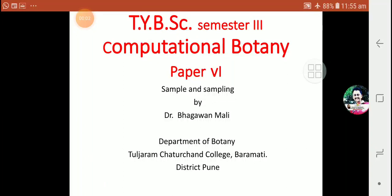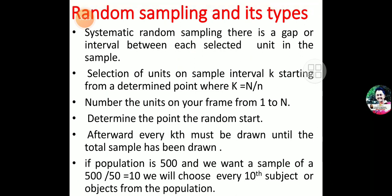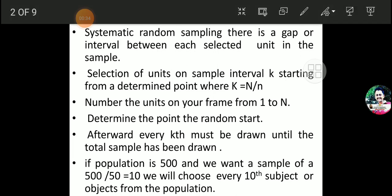Hello students, here we have been learning a very interesting paper — Paper 6, that is Computational Botany. From this Computational Botany, we have been learning related to the second unit: Sample and Sampling. Students, we have to learn today the types of random sampling: what is random sampling and its types.